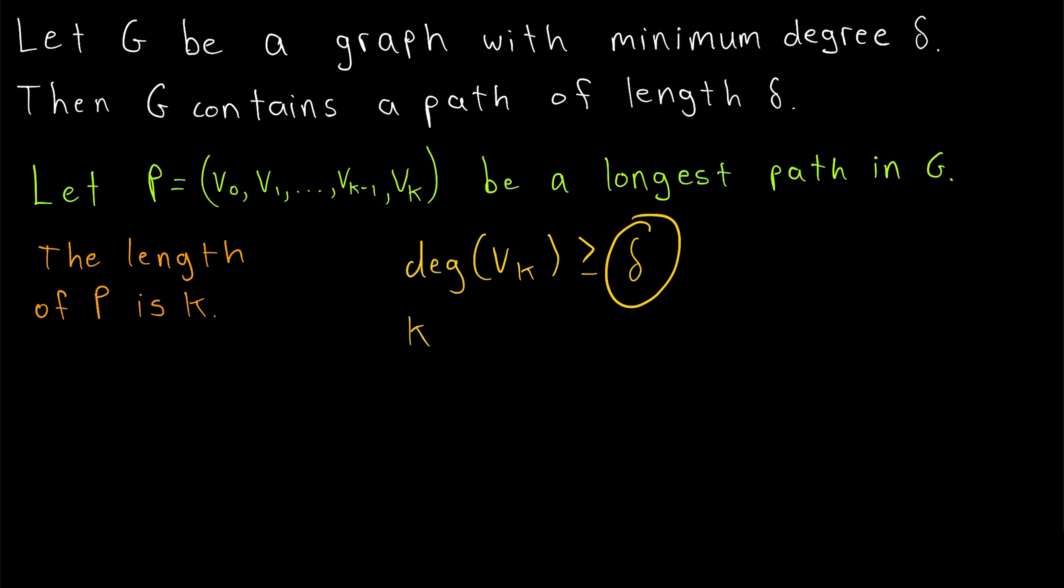Then, since the at least delta neighbors of vk must lie among these other k vertices on the path, k must be greater than or equal to delta to accommodate those at least delta neighbors.